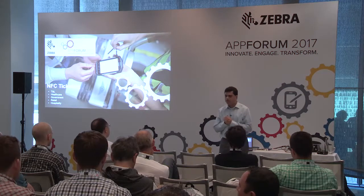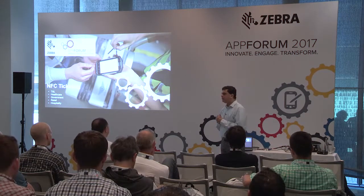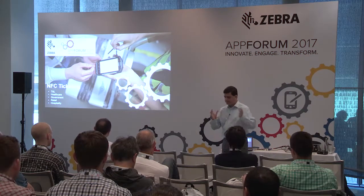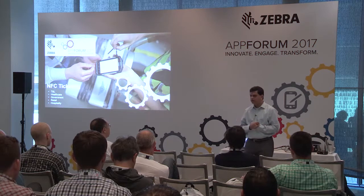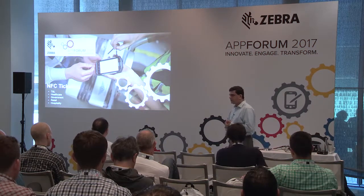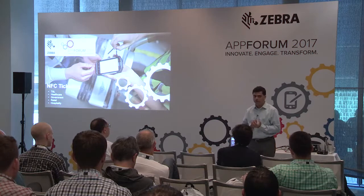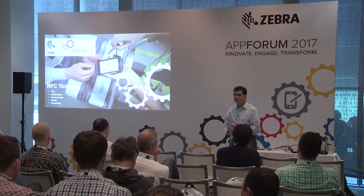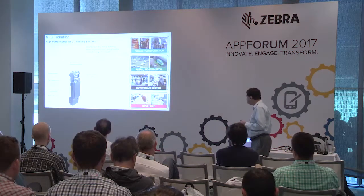Moving on to one of the solutions we are working on today — some form of beta is already available. This is called NFC ticketing. Earlier, on the TC75 about a year ago, we had what we call Secure NFC. Secure NFC built on what Google provides — a lot of our devices have NFC support — but we are getting into Secure NFC here, and there are APIs available on EMDK. This NFC ticketing is a progression beyond that Secure NFC.